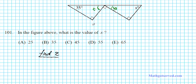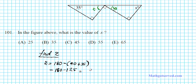The triangle angle sum theorem states that the sum of angles in a triangle is 180 degrees. So if we want to find angle z, we add the other two angles and subtract from 180. Z equals 180 minus 90 plus 35. 90 plus 35 is 125, and 180 minus 125 gives us 55 degrees. So angle z is 55 degrees.